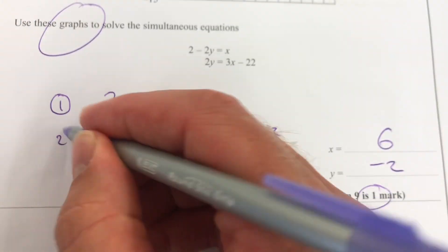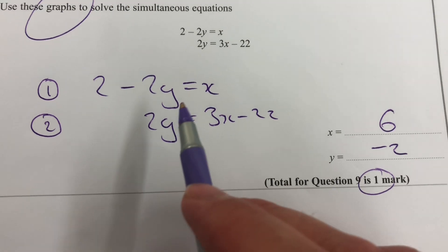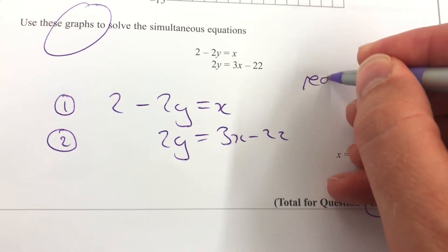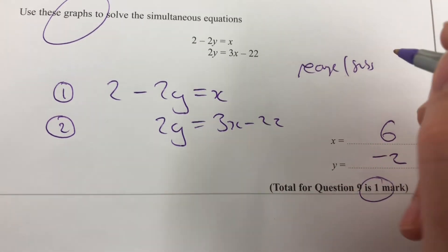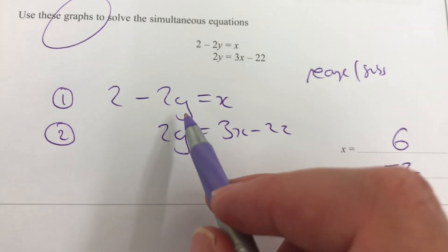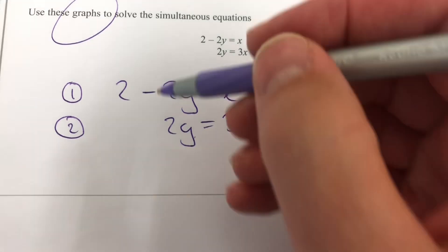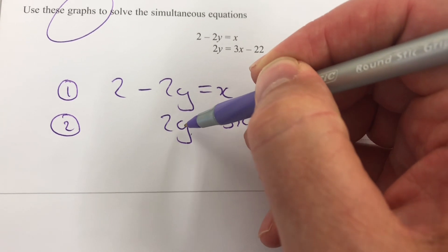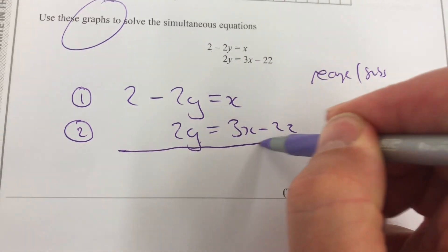If that's equation 1 and that's equation 2, you could use rearranging and substitution to find this in terms of y and then solve the other. But actually, if you look at that minus 2y and that's plus 2y, I could just add them.